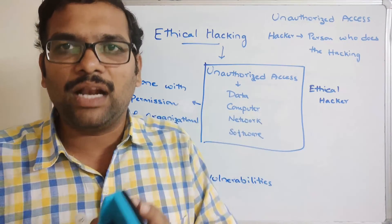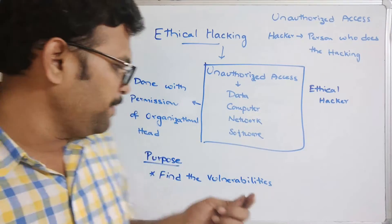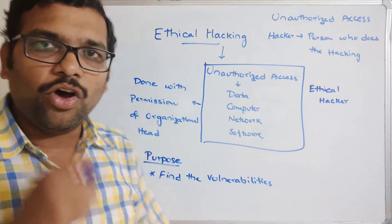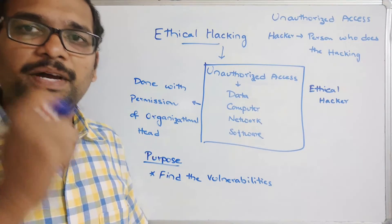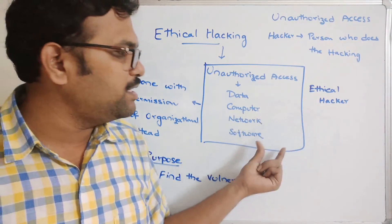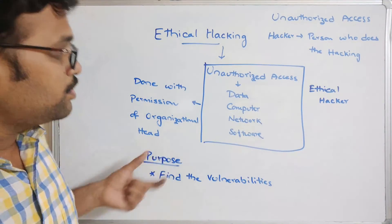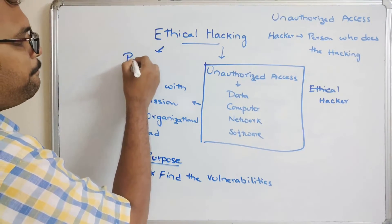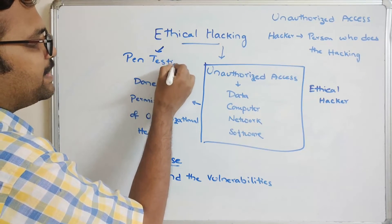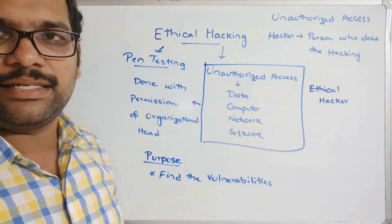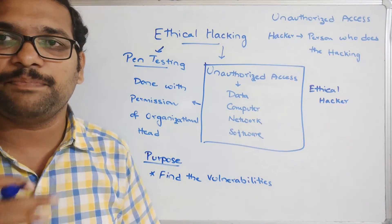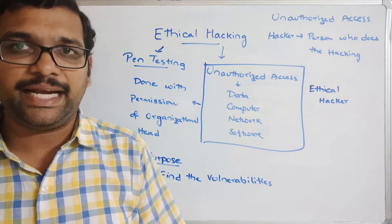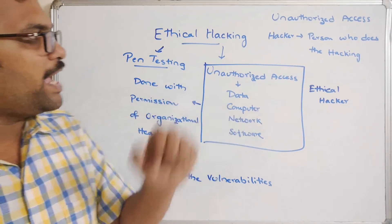Once vulnerabilities are found, the organization will take preventive measures to overcome and patch those weaknesses. In order to find the vulnerabilities, weaknesses, and possible threats, the organization recruits a person for this hacking process. This is called ethical hacking, or simply pen testing — penetration testing — done for testing purposes to find weaknesses and possible threats.